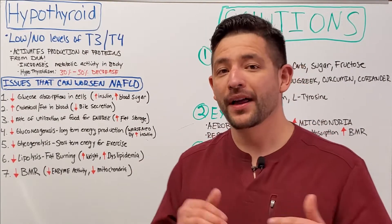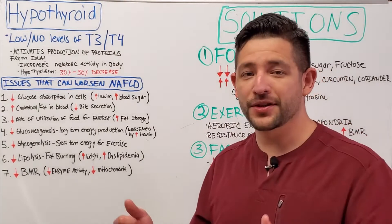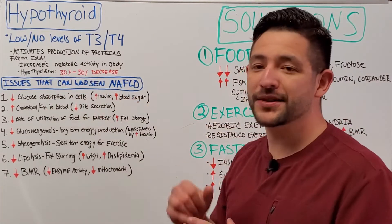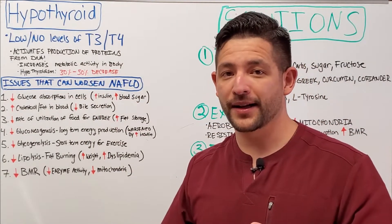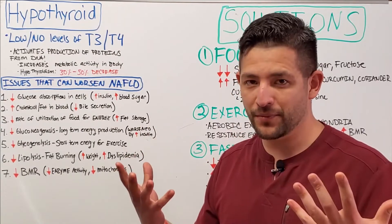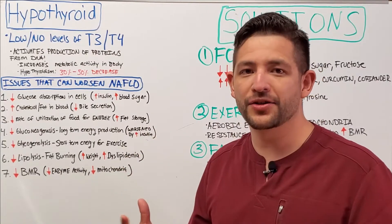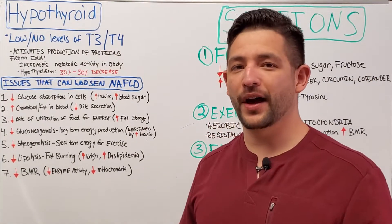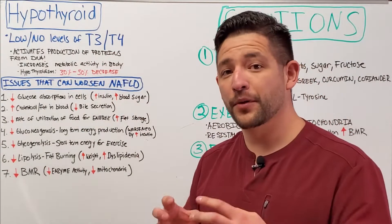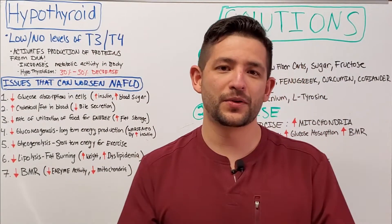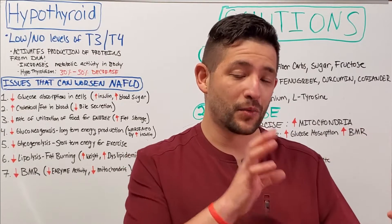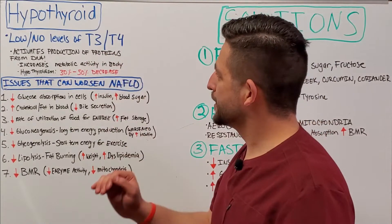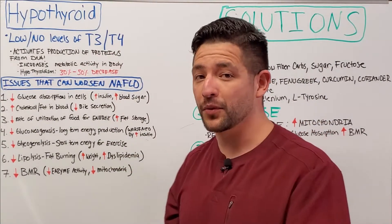With people who have hypothyroidism, their T3 and T4 levels are either really low or non-existent, which can result in as much as a 30 to 50 percent decrease in metabolic activity — a decrease in your overall metabolism and your ability to utilize energy and facilitate metabolic processes. So let's talk about the specific issues caused by low levels of T3 and T4 that can contribute to or worsen a fatty liver.